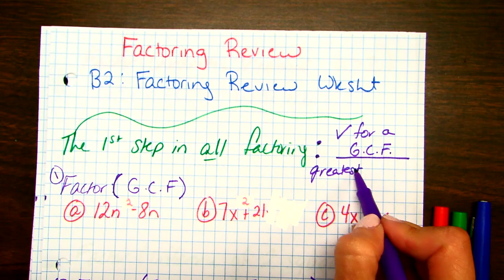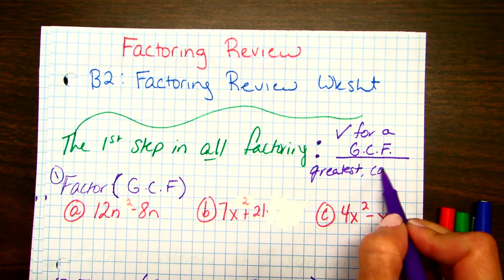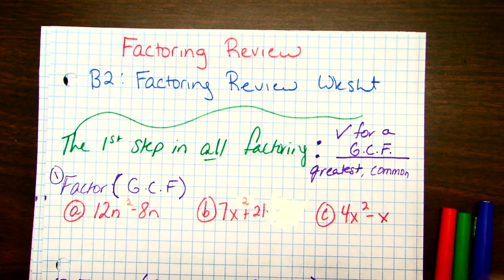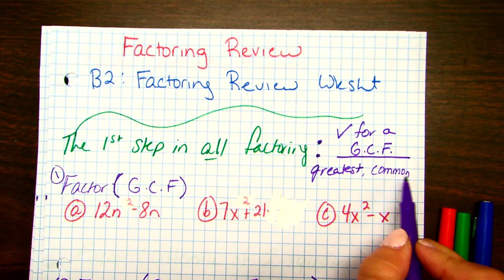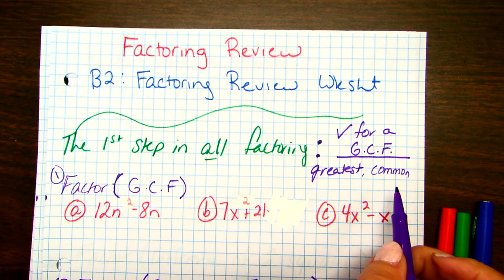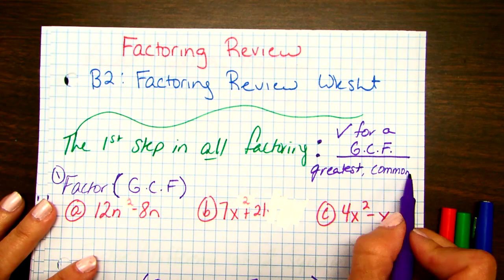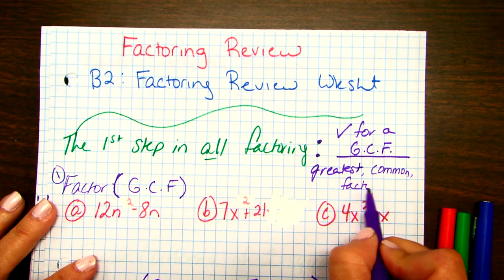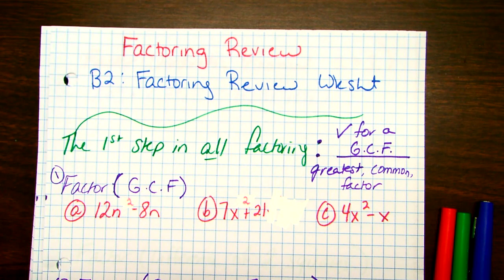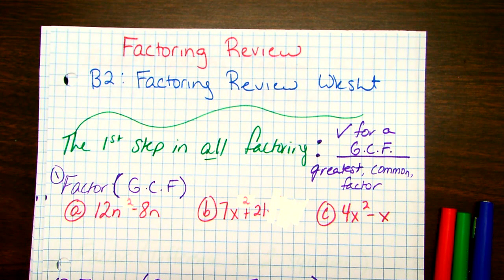Greatest: biggest number. Common — which means what they have in common. You all have in common that you have me as your Algebra 2 teacher; you all have in common that you go to Countryside High School. Greatest, common, and then factor — I think that's the word we know the least about. Factor is a number that goes into another number evenly. Like, three is a factor of six. Is three a factor of five? No, it doesn't go in evenly — you get a remainder.